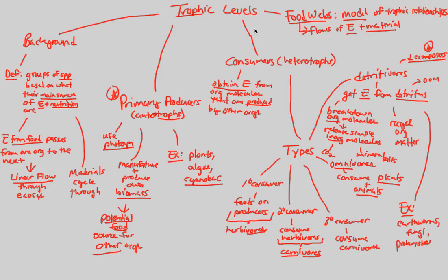Overall, through this idea of trophic levels, we've established primary producers, consumers, and the concept of food webs. Be very mindful of the idea of linear flow through an ecosystem, and notice how we have a buildup of trophic levels as we move forward.